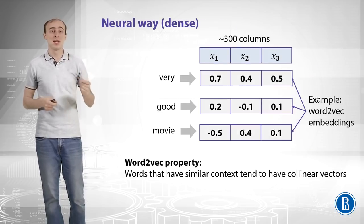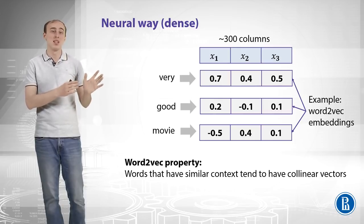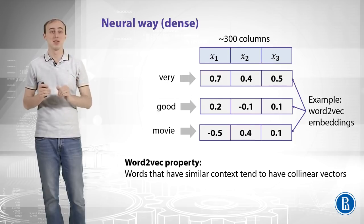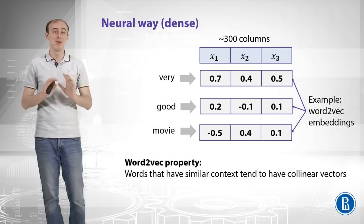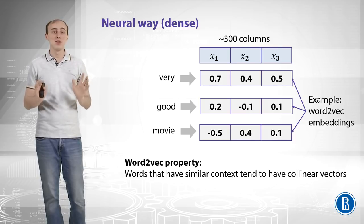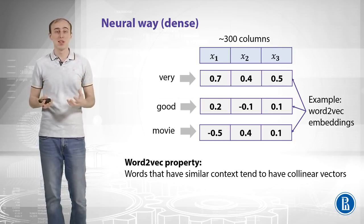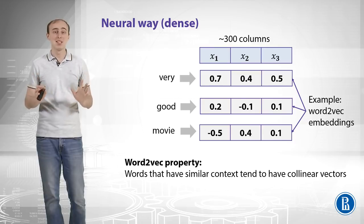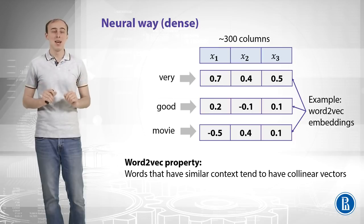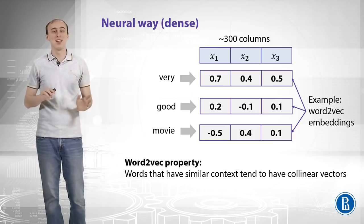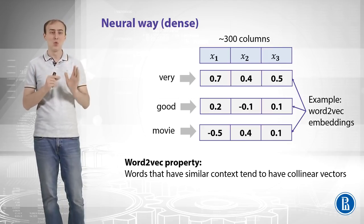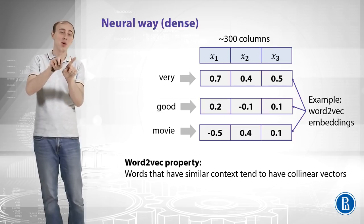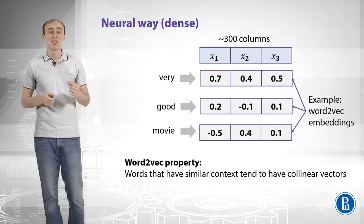Now let's move to the neural network way. Opposite to the sparse representation we've seen in bag of words, in neural networks we usually prefer dense representations. We can replace each word with a dense vector that is much shorter — it can have 300 values with real-valued items. An example of such vectors is word2vec embeddings, which are pre-trained in an unsupervised manner. We will dive into word2vec details in the next weeks, but what we need to know now is that words with similar context in terms of neighboring words tend to have vectors that are collinear, pointing roughly in the same direction.